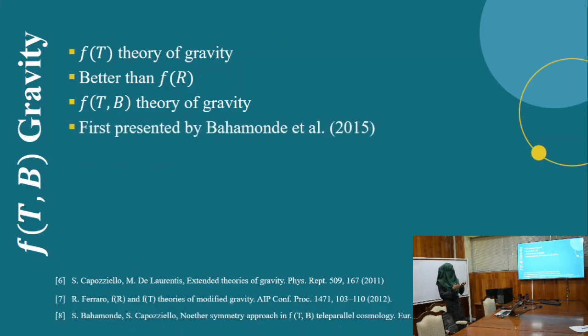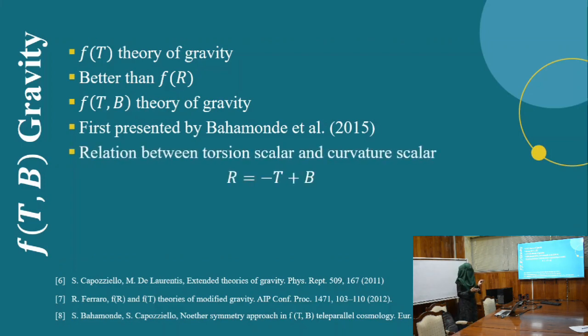It linked f(R) and f(T) theory of gravity by the following relation: R equals minus T plus B, where T is the torsion scalar and B is the boundary term.